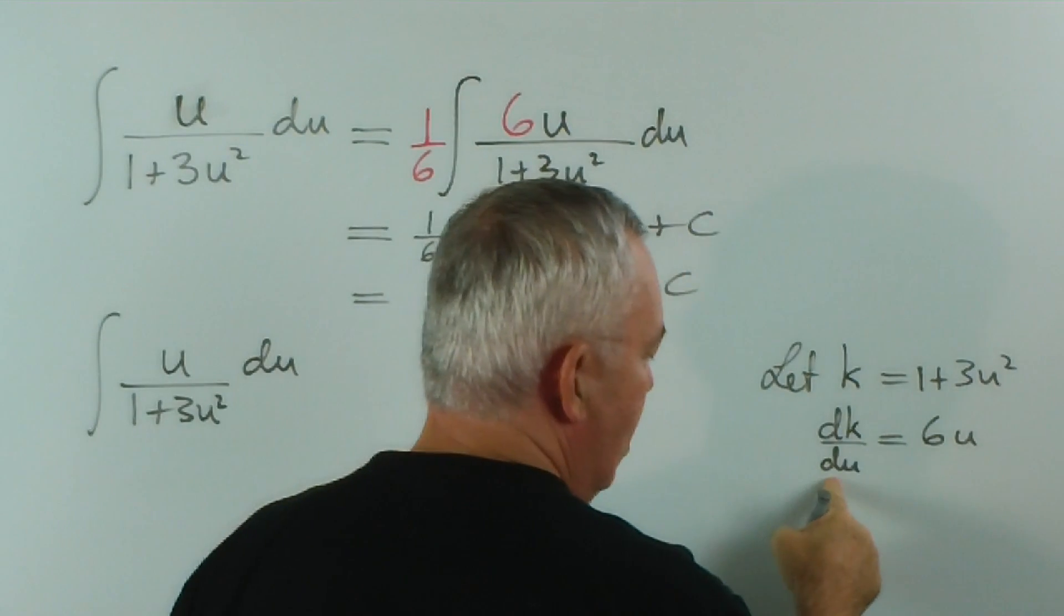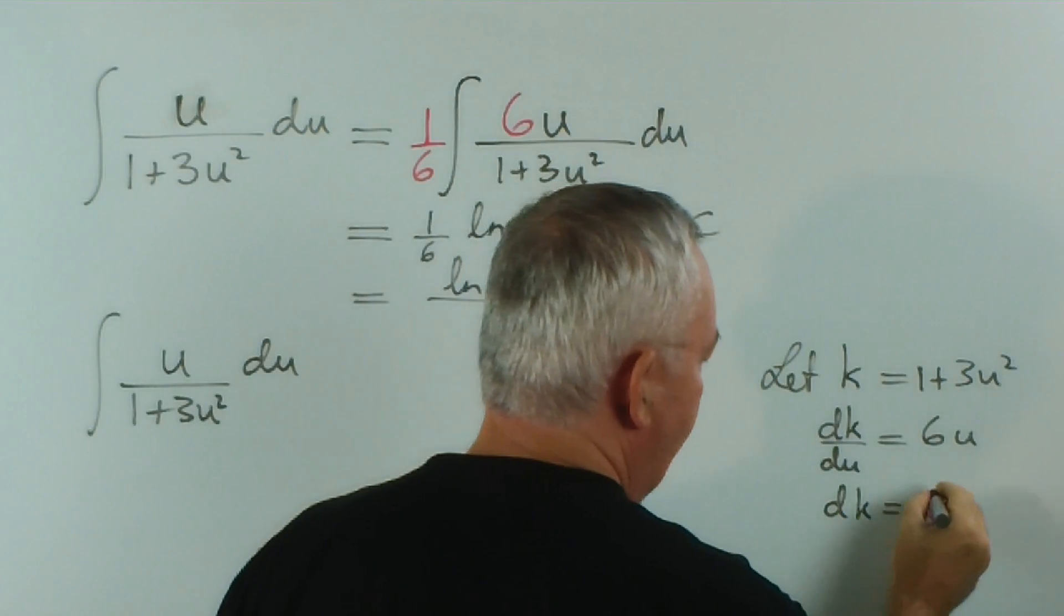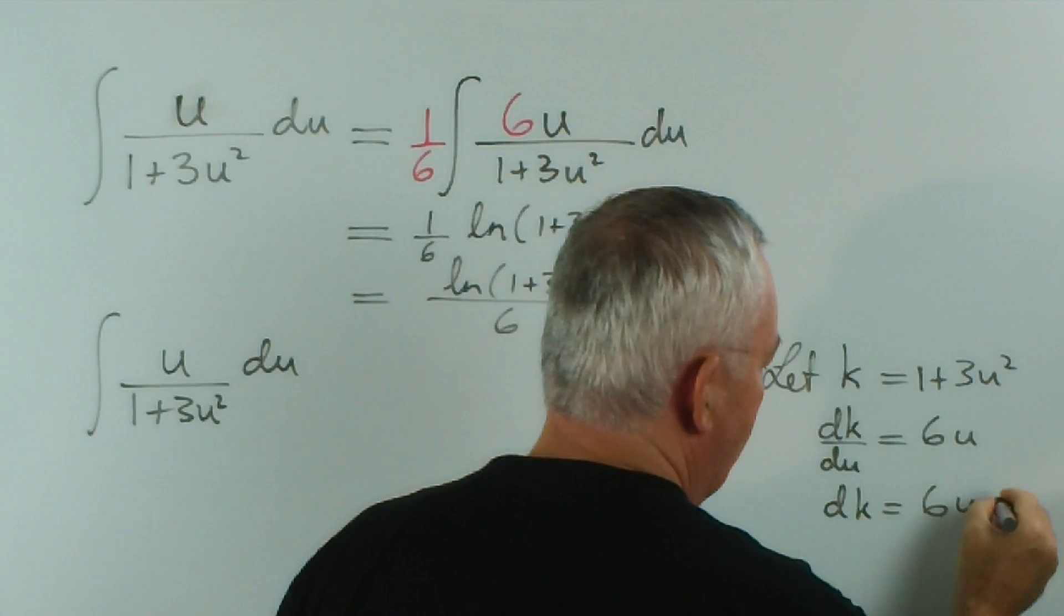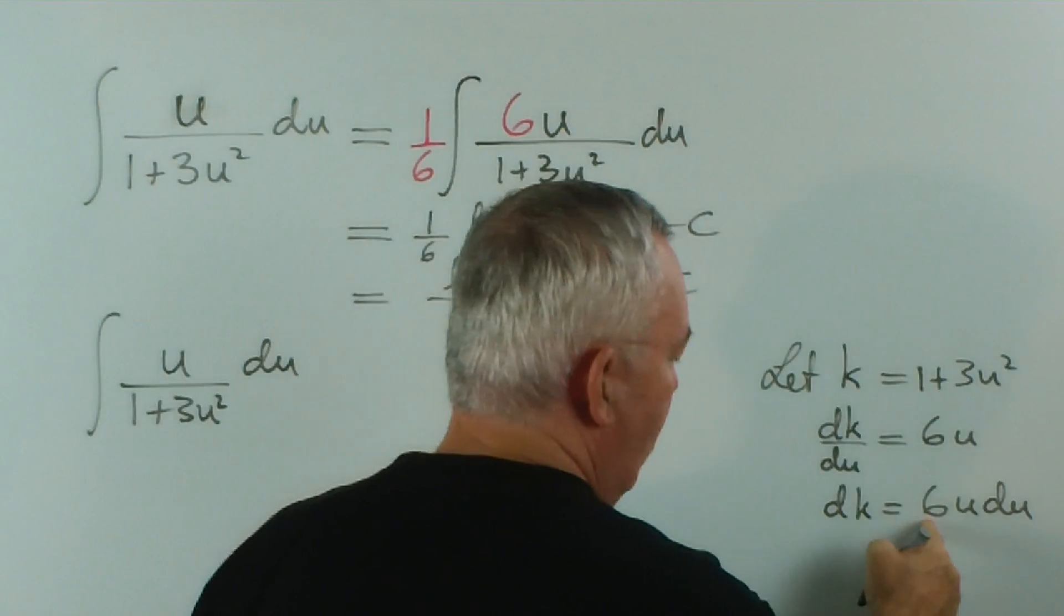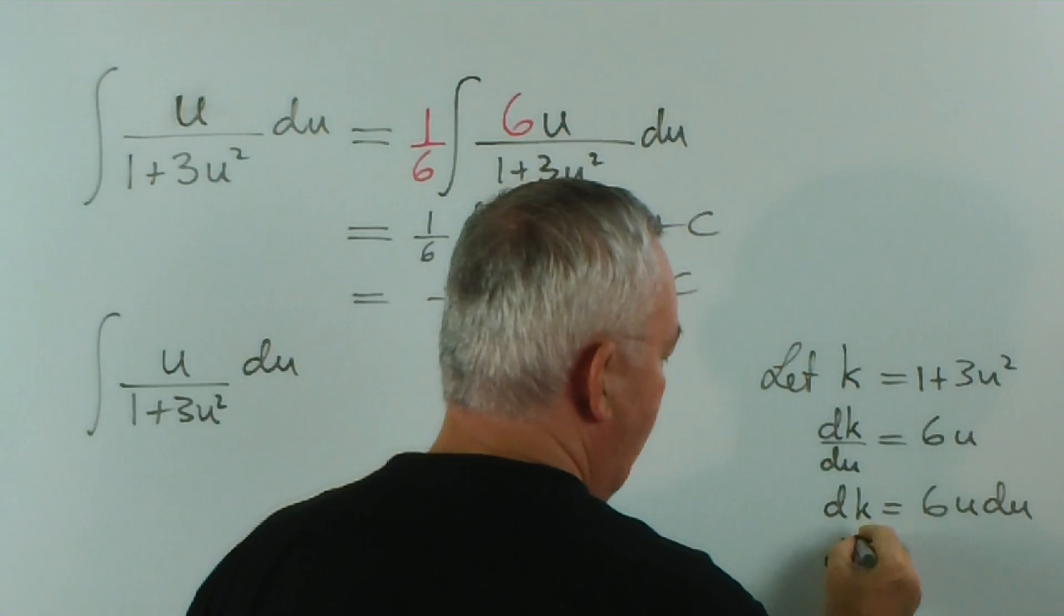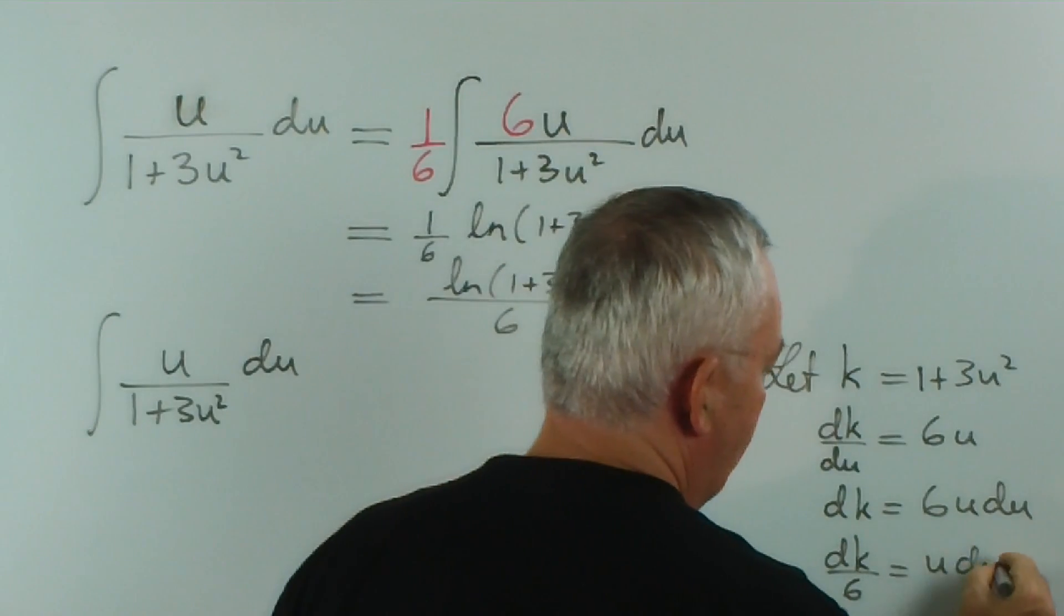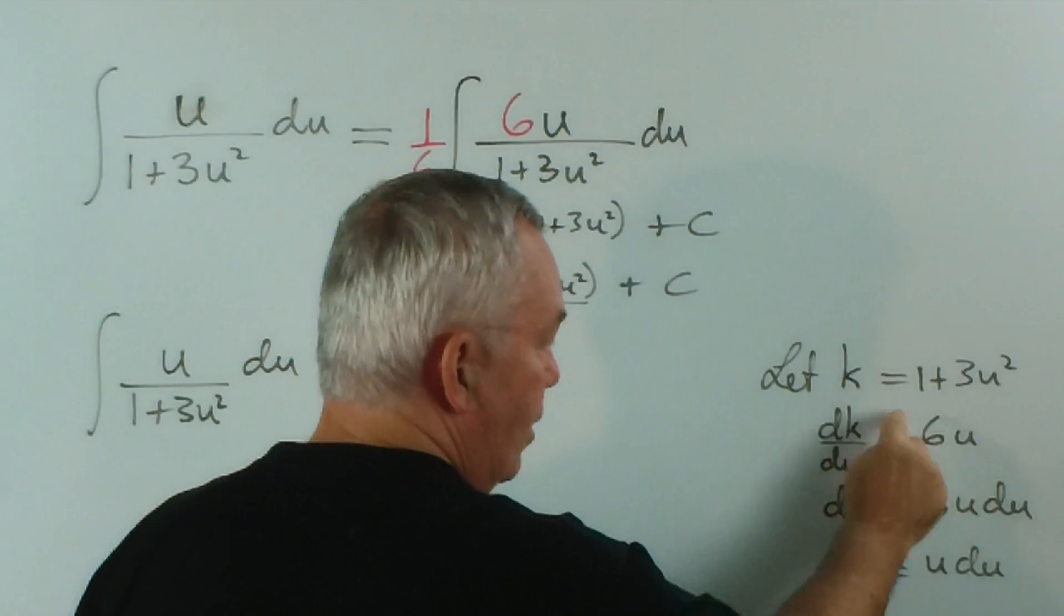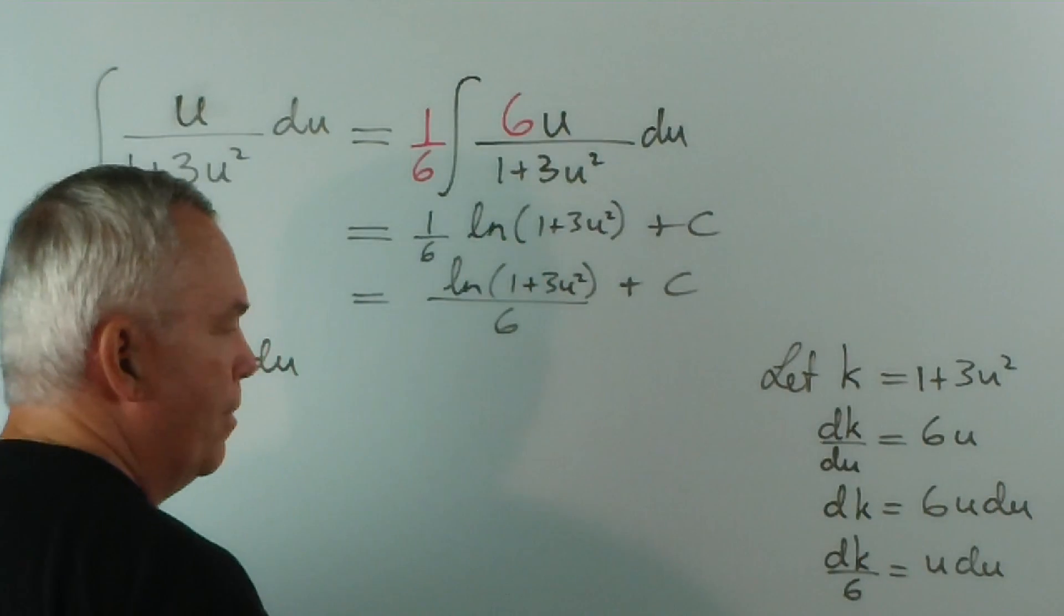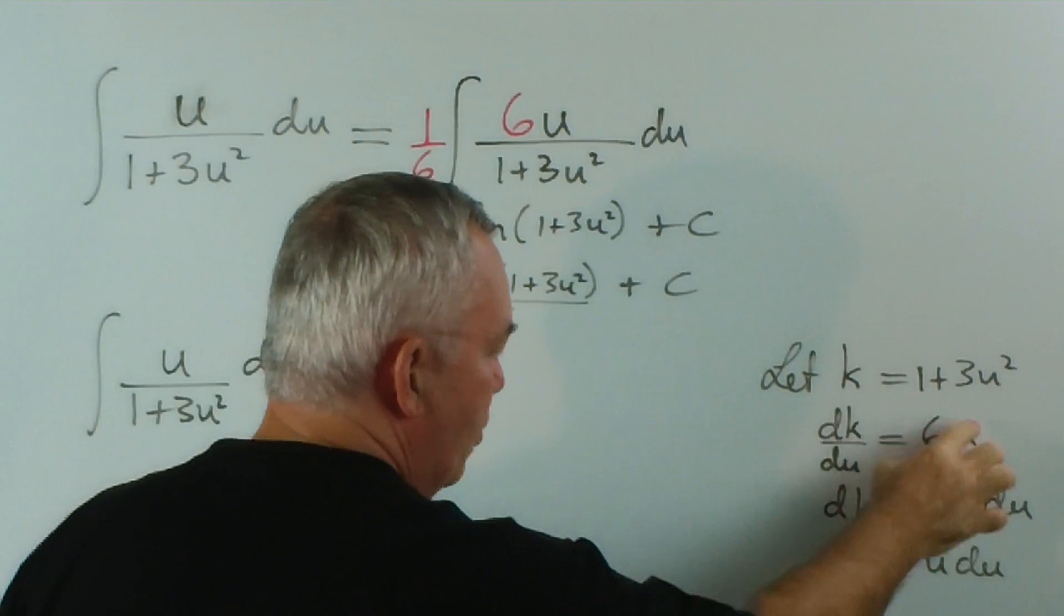Which means, if we multiply both sides by du, that dk is 6u du. And if we divide by 6, we get dk on 6 equals u du. This all derives from that substitution. So, we substitute, we perform the derivative, and then we rearrange.